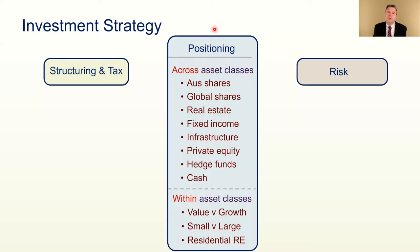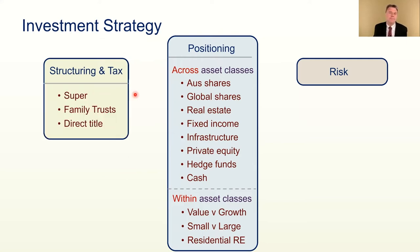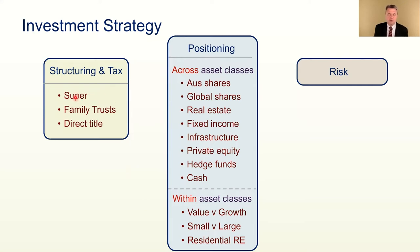The what of strategy is positioning across and within asset classes. Then we need the where — where are we going to hold the assets and stream cash flows through? One structure is superannuation: in an industry fund, a self-managed super fund, a retail fund, or a corporate or government fund. These are all trusts in which you can hold assets. There are also family trusts, or you might go for direct title — held directly, which would typically be the case with negative gearing.